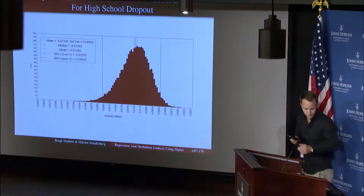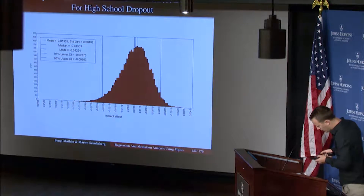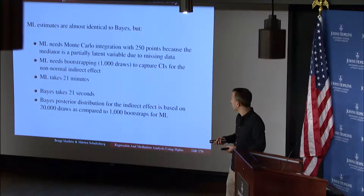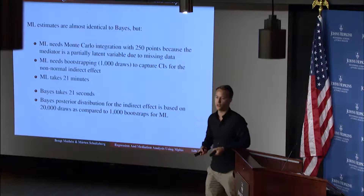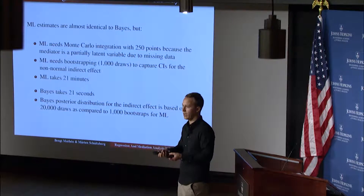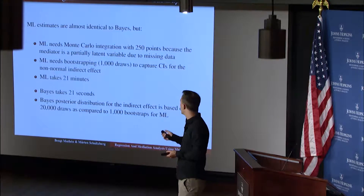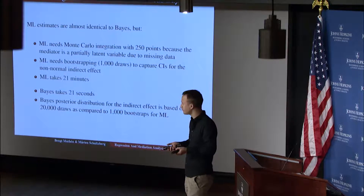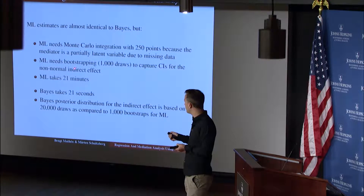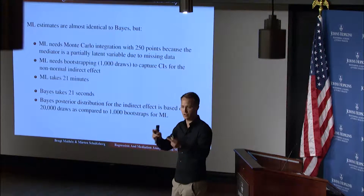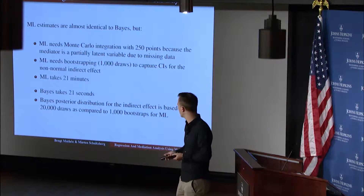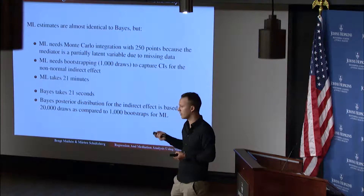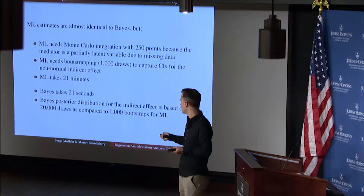If we compare with the ML estimates, estimating this model with maximum likelihood gives almost identical results in the sense that you would draw the same conclusions, though not numerically identical. Maximum likelihood needs Monte Carlo integration with 250 points because the mediator is partially latent — not observed for everyone. We would also need bootstrap for the maximum likelihood framework to capture the skewness of the sampling distribution of the indirect effect and to get the non-symmetrical confidence interval. Maximum likelihood takes 21 minutes here whereas BAYES takes 21 seconds — a pretty large difference.